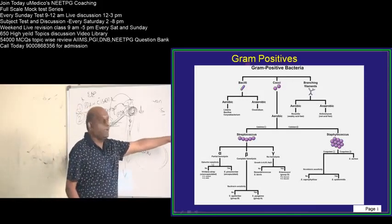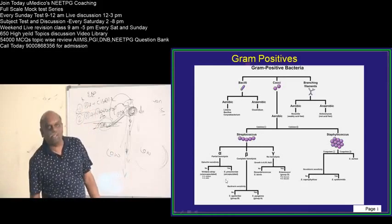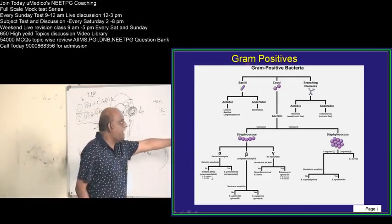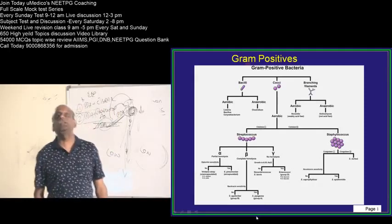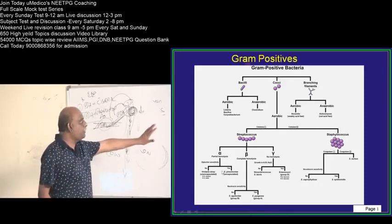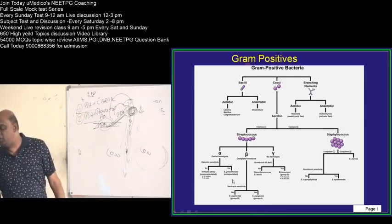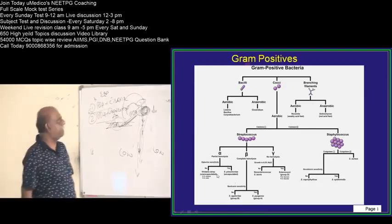And what is the one which is not optochin sensitive? The viridans group streptococci. Streptococcus viridans is typically not optochin sensitive. That is what you have to basically remember.